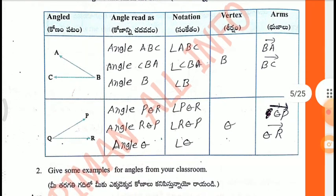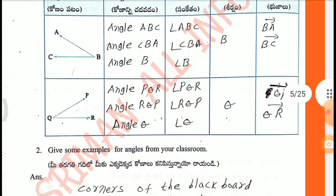Next one: Read as: Angle PQR or Angle RQP or Angle Q. Notation: Angle PQR or Angle RQP or Angle Q. Vertex: Q. Arms: QP and QR.